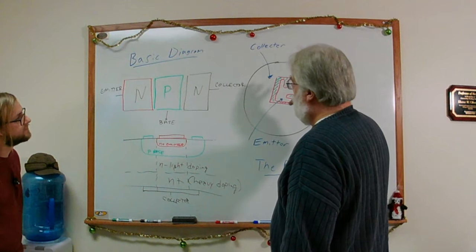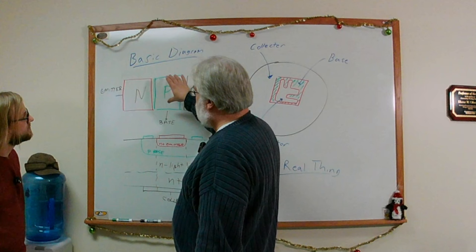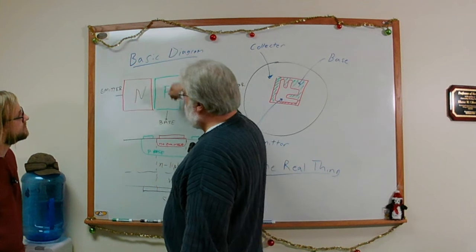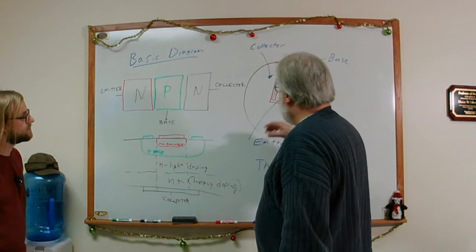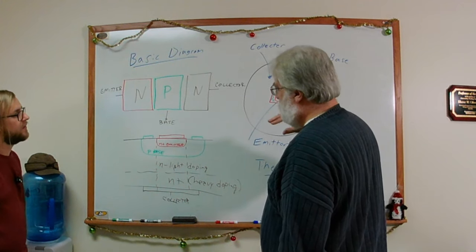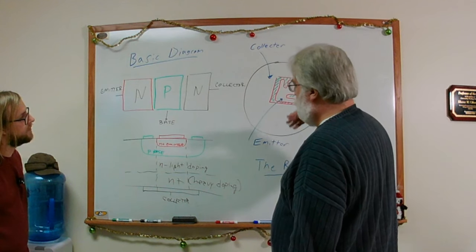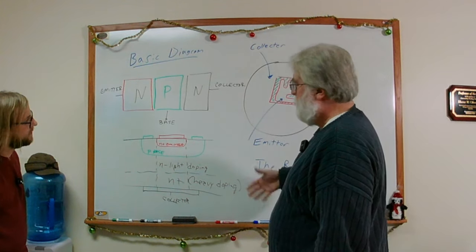What you're looking at when you see the image on the microscope screen, you're actually seeing the top of the device, or the top of the emitter and the contacts to the base that are adjacent to the emitter. That's what that represents here.